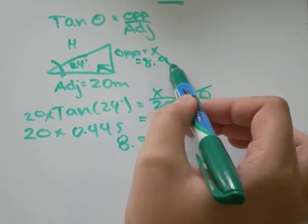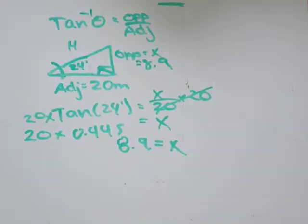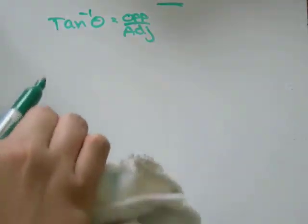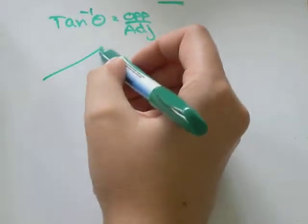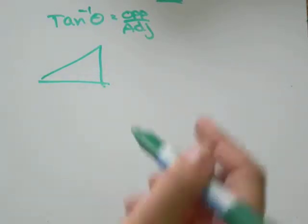So, my opposite side was equal to 8.9. Now, tan of negative 1 is different than what we've been doing. You use tan of negative 1 when you know the length of all the sides, or at least the opposite and adjacent sides.